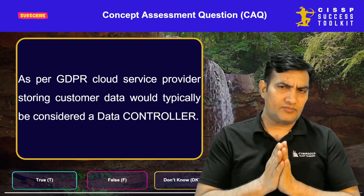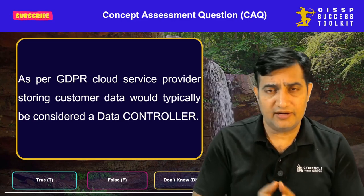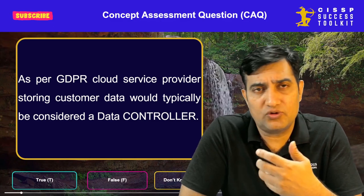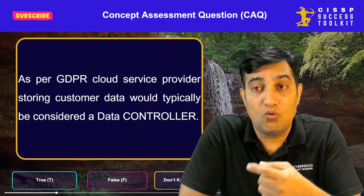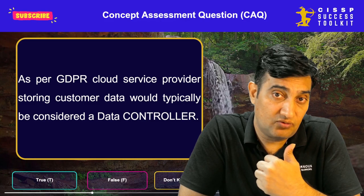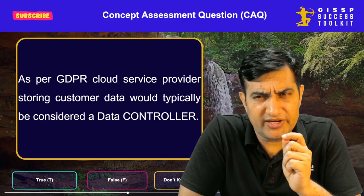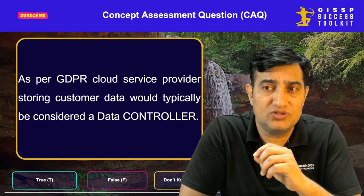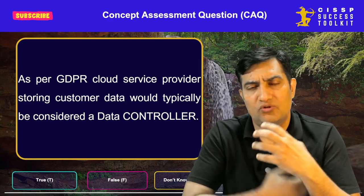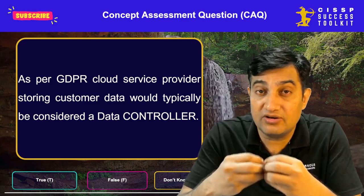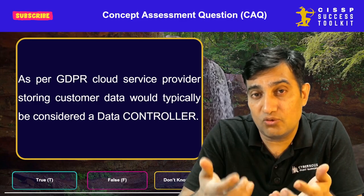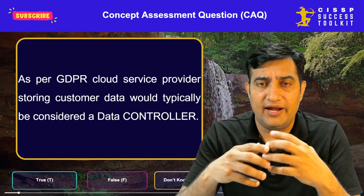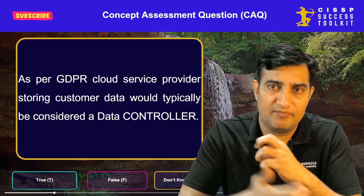On the other end, a data processor is an entity that processes personal information on behalf of the data controller. They have legal obligations under GDPR, but their prime responsibilities are limited to processing data as instructed by the data controller. The main things are driven by the data controller, and compliance is not directly enforced on the data processor in the same way.